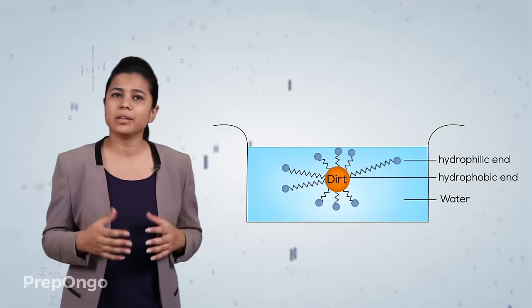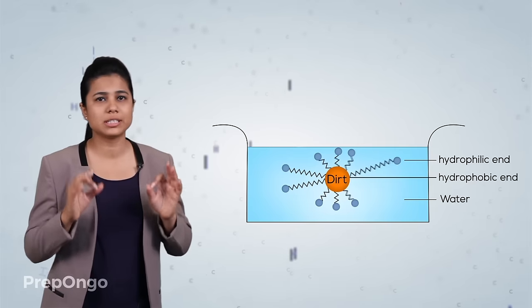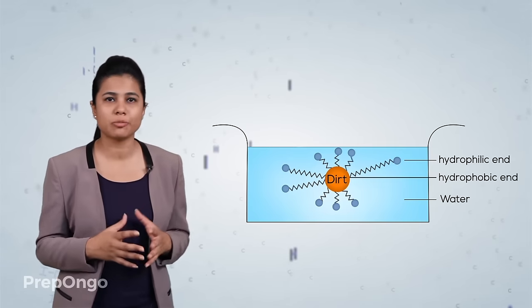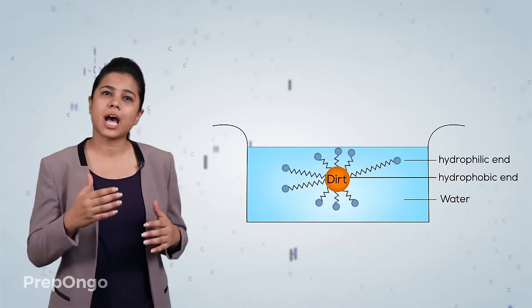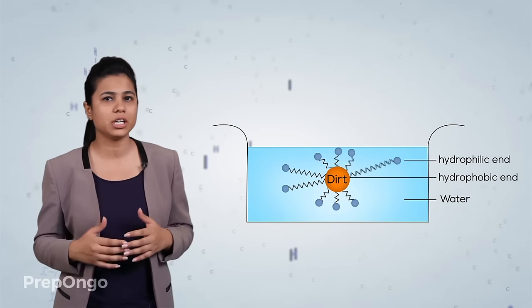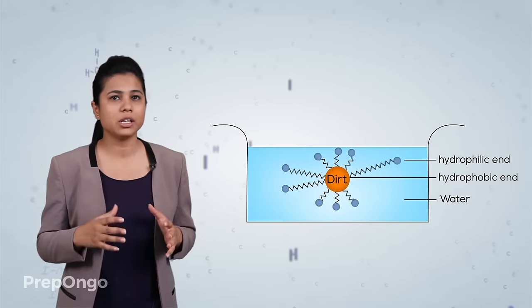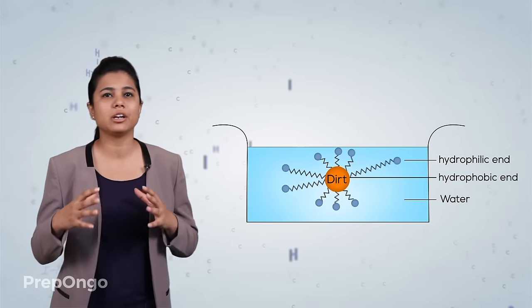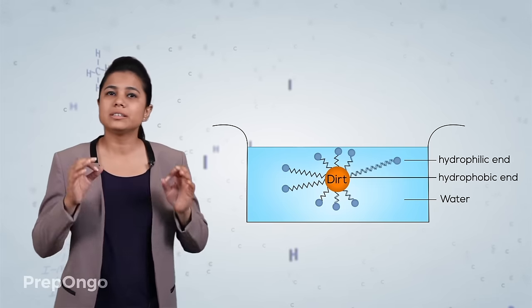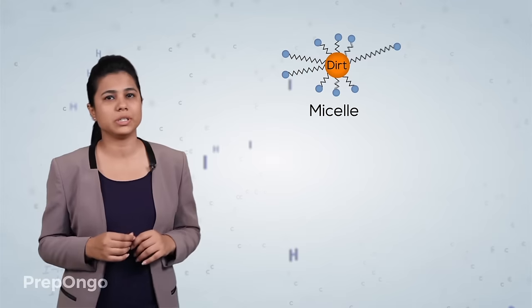In some time many molecules get attached in a similar way and form a cluster of molecules in which the hydrophobic tail is in the interior of the cluster which is near to the dirt and the hydrophilic end is on the surface of the water and remains attached to the water. This leads to the formation of micelles.